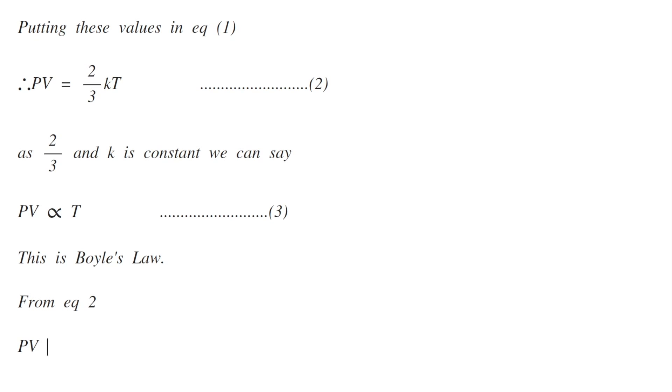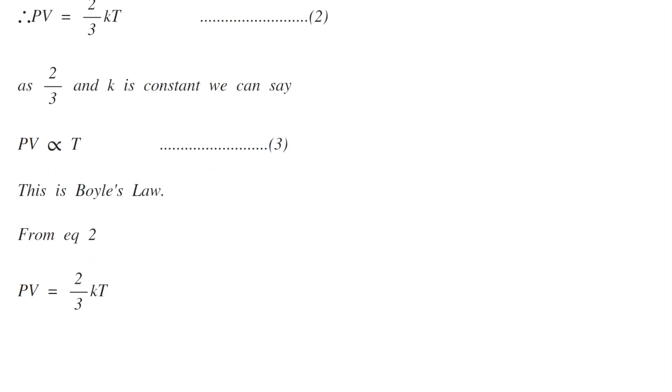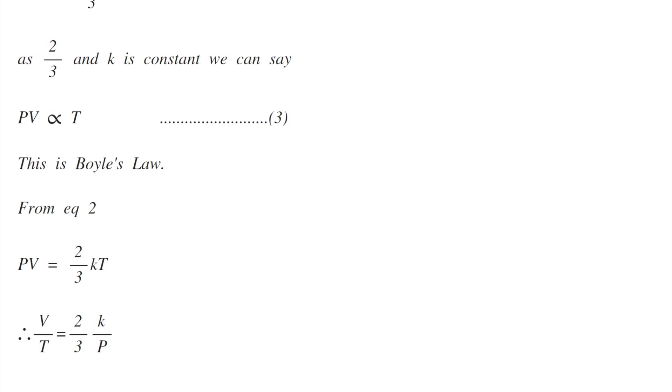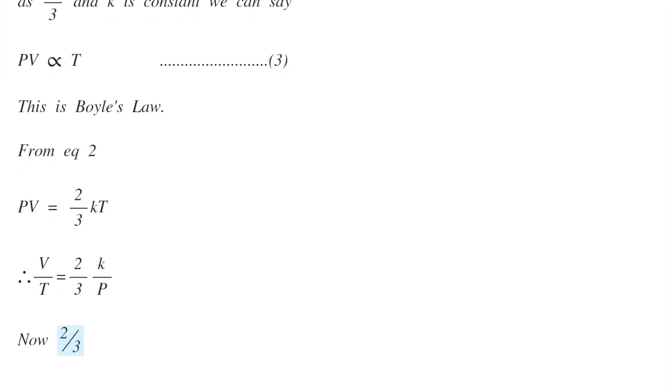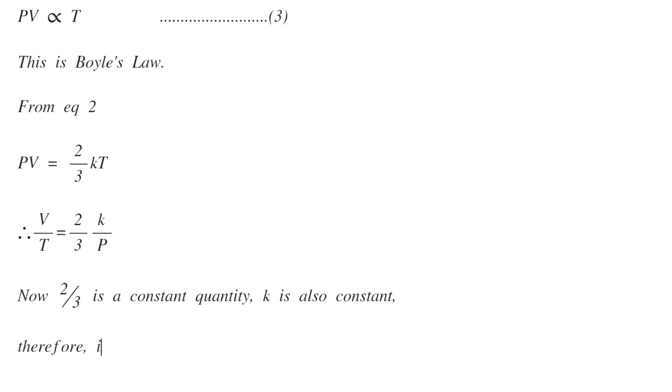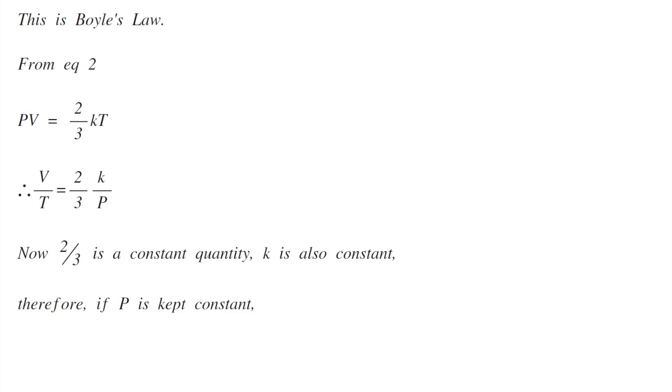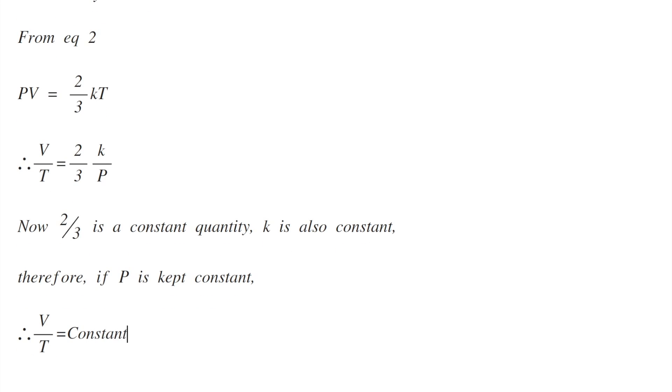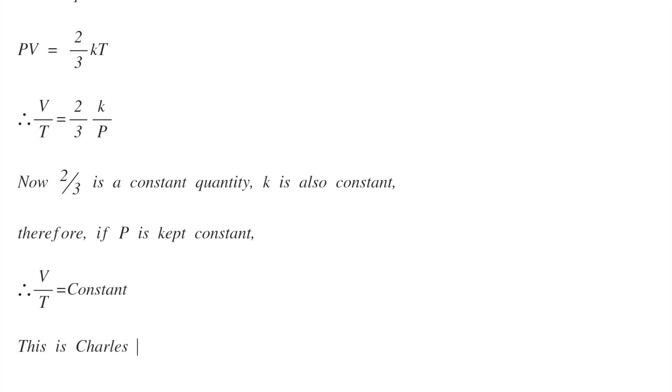From equation 2, PV equals 2/3 kT, therefore V/T equals 2/3 k/P. Now 2/3 and k are constants, so if P is kept constant, V/T becomes constant. This is Charles law.